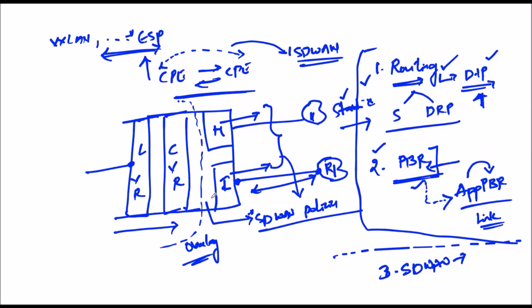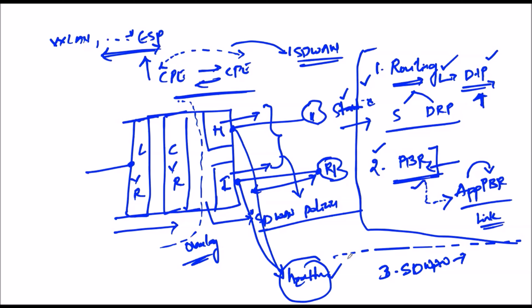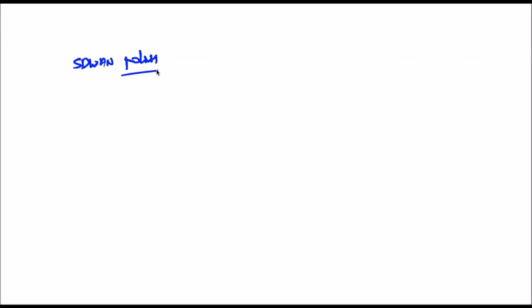How is the next hop selected in a dynamic manner? We are not relying on static next hops or transports - we are relying on the health of the WAN circuit. Based upon the WAN circuit's health, we decide the next-hop information and WAN transport. This selection of WAN transport happens by default with the SD-WAN architecture. If you want to influence underlay connectivity, always think about configuring SD-WAN policies.